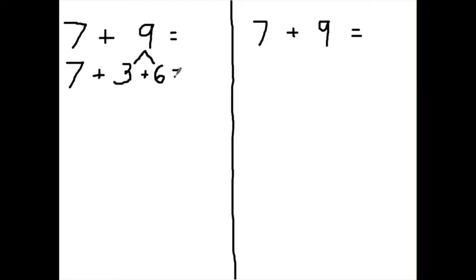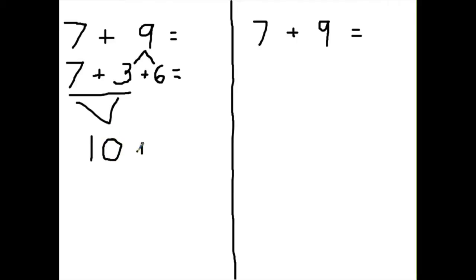We're going to keep our equal signs lined up to keep the problem organized. Now we take 7 and 3 and turn that into 10 using a number bond. And the second you see that you have 10 plus 6, those of you who have been doing the say-10 way will already know the answer, because what you have is 1 ten and 6 more, which is the same thing as 16.